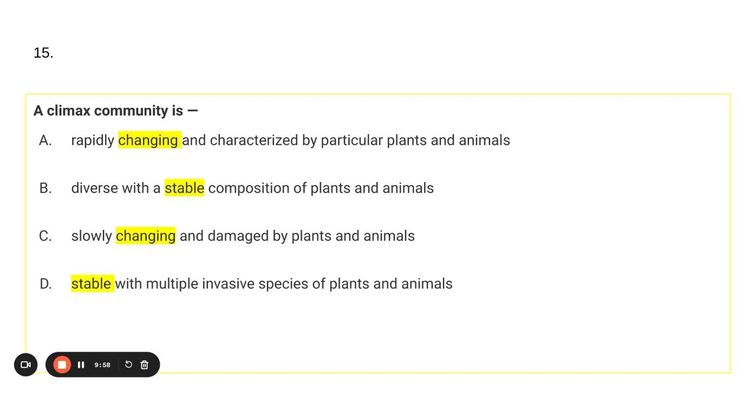A climax community is diverse with the stable composition of plants and animals, or a climax community is stable with multiple invasive species of plants and animals. The best answer is B. If you have invasive species like kudzu or a snakehead fish, that might actually cause instability in your climax community by disrupting native food chains and food webs.